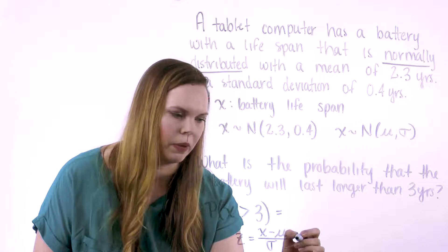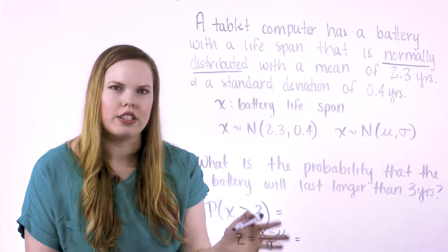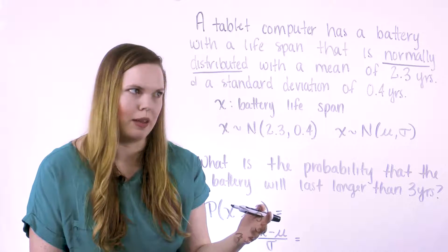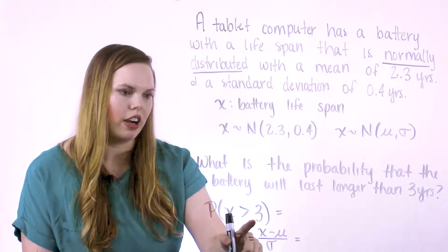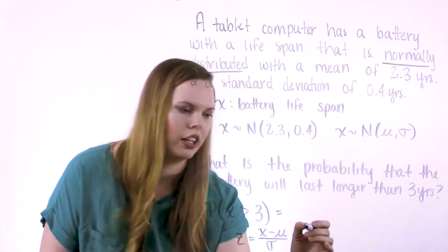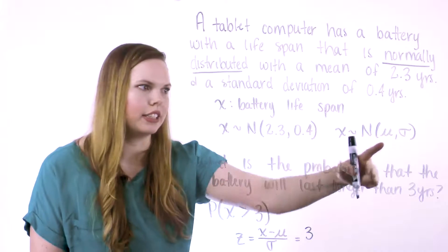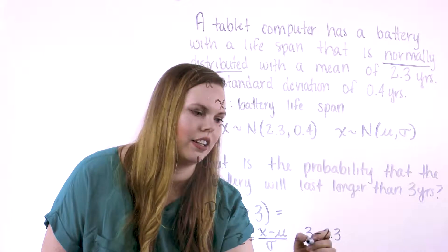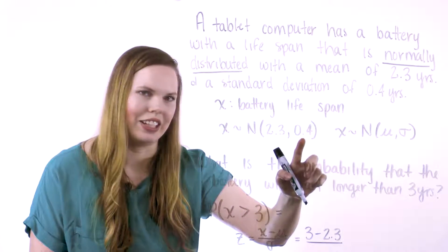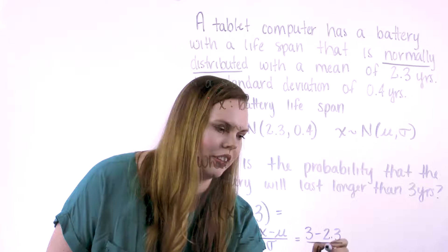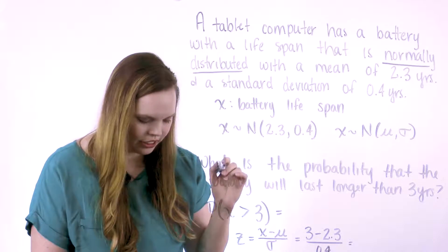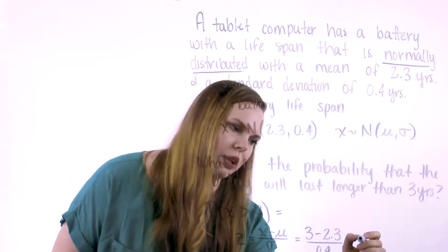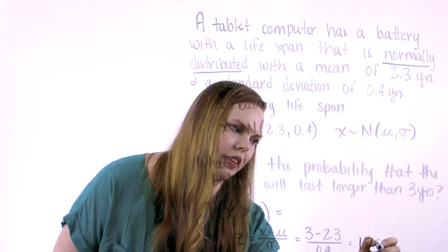And so I'm just going to simply plug these values into this to standardize this problem to a z-score problem. Because we know how to solve those with the table. So we'll find our x, it's what we're dealing with here, our 3. The mean is given here. And the standard deviation is given here. And this gives us our z-score, the number of standard deviations we are away from the mean. And it happens to be 1.75.